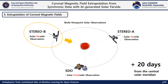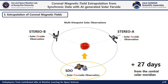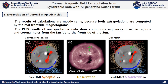We tracked the active regions and observed them from STEREO-B, whose spacecraft longitude was near the east limb of the solar front side. Our results represent the emergence of active regions and the distributions of open field areas consistent with the observation. After the sun rotates and the active regions are observed at the front side, the results of calculation are mostly the same because both extrapolations are computed from front-side magnetograms. We can confirm that our results show a continuous sequence of active regions and coronal holes from the far side to the front side of the sun.